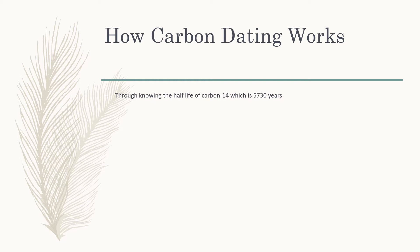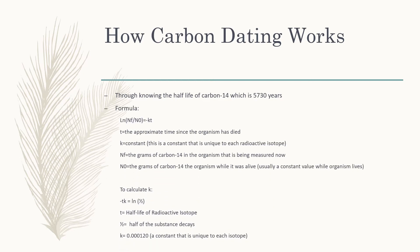So, how does carbon dating work? Professor Willie Libby made this formula: LN(NF/NO) equals negative KT. T is the approximate amount of time the organism has been dead, K is the decay constant — which is different for each radioactive isotope — and NF is the current amount of grams of carbon-14 in the organism being measured.